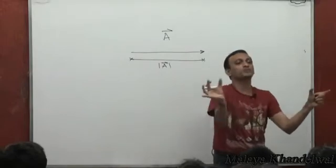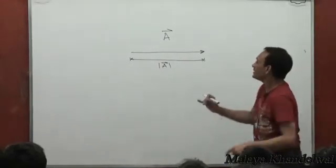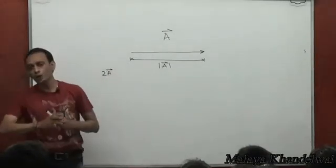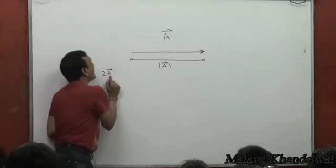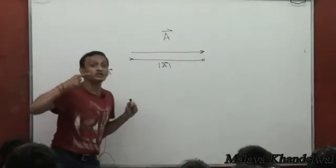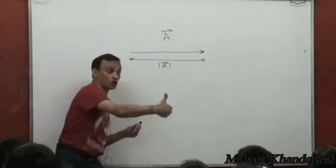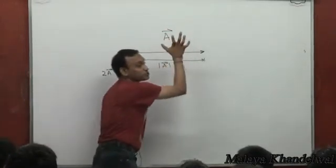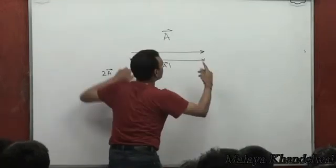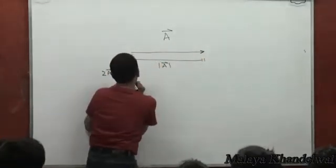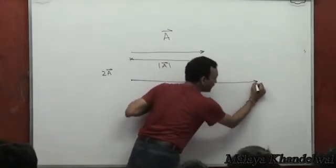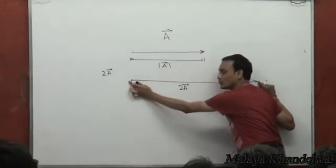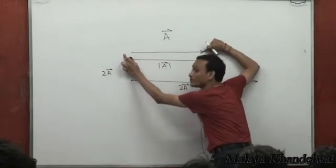Mod A means the magnitude of A, which is proportional to this length. If someone talks of a vector 2A, in verbose this means it's a vector twice as large as A but having a direction synonymous with A. The direction of A and the direction of 2A is the same. The geometric representation of 2A would be a vector parallel to A but twice as large, so the line segment representing 2A would be twice as large as the line segment representing A.